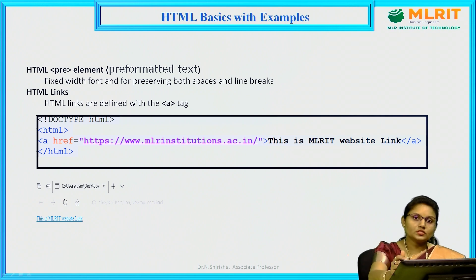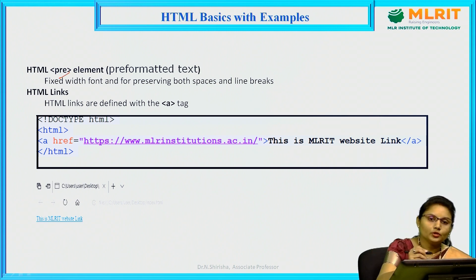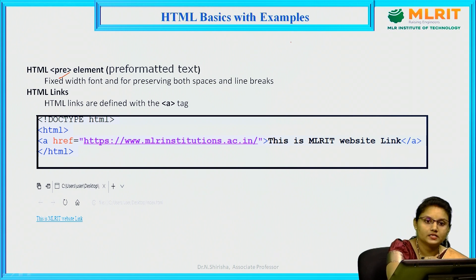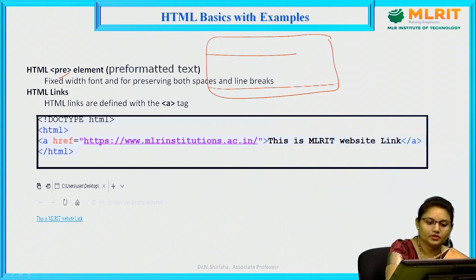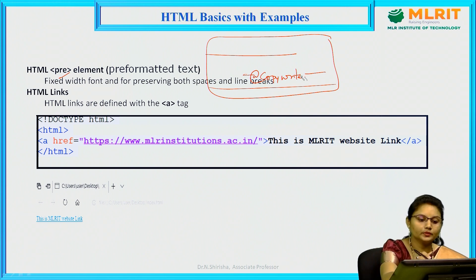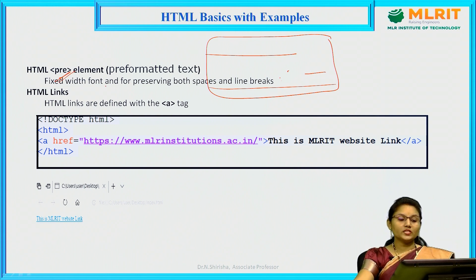In the last class we covered h1, h2, h3 heading tags and the p tag for paragraphs. Continuing from that, we will see more elements used in designing. The HTML pre element is used whenever you want to give predefined text — for example, if you want to give an address with a particular tab space and copyright text, displayed exactly as written. For this we use the pre tag, which preserves both spaces and line breaks using a fixed-width font.